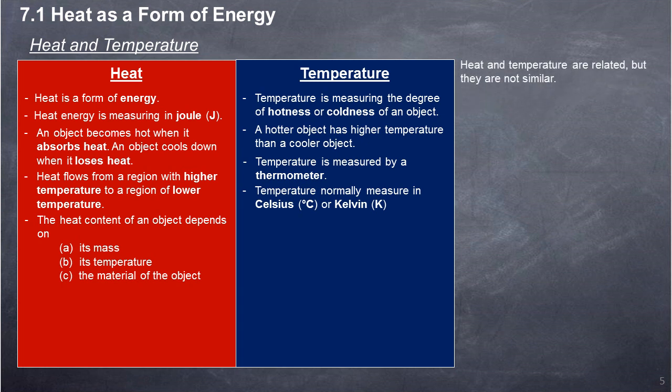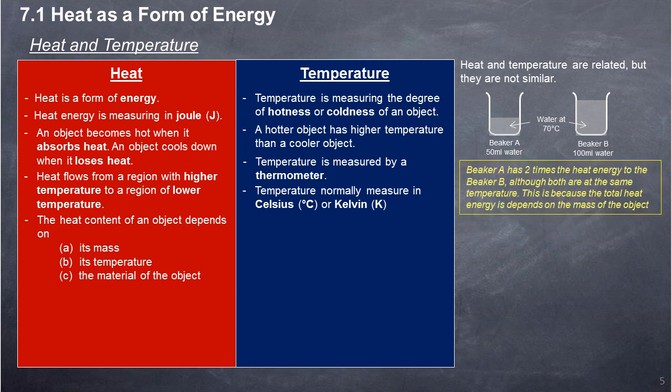Heat and temperature are related but they are not similar. For example, Beaker A has two times the heat energy of Beaker B, although both are at the same temperature. This is because the total heat energy depends on the mass of the object.